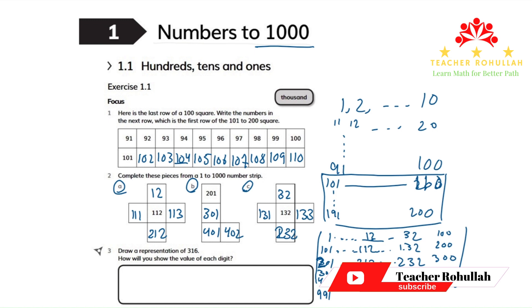In the third example, it says, draw a representation of 316. 316 is given here. It is asking us to draw a representation of it. How will you show the value of each digit?